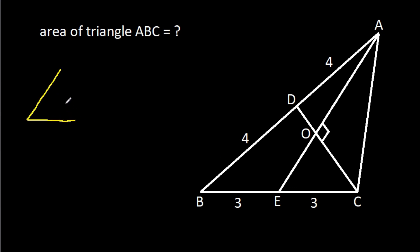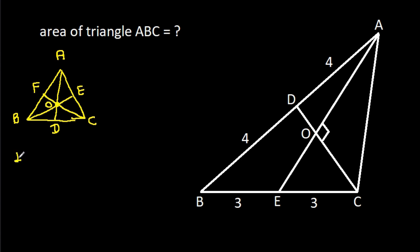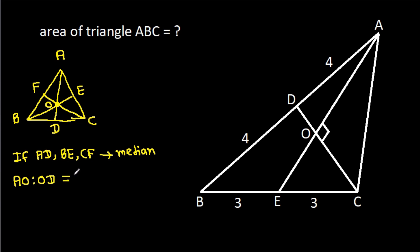In any triangle ABC, if AD, BE and CF are medians, then they will intersect at a single point, suppose O. If AD, BE and CF are medians intersecting at O, then AO:OD = BO:OE = CO:OF = 2:1.